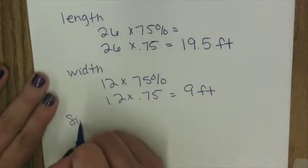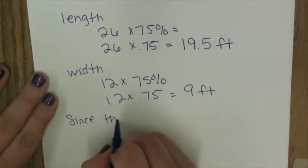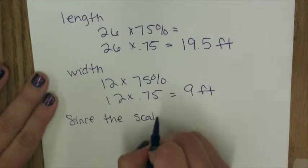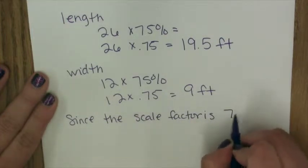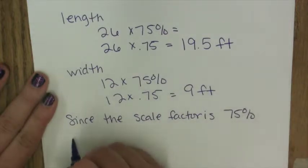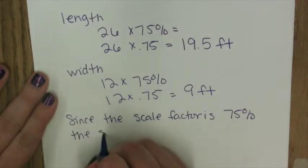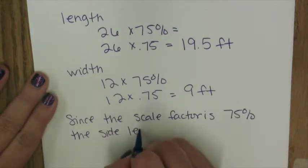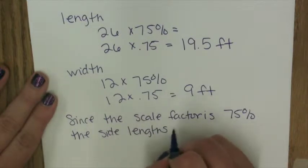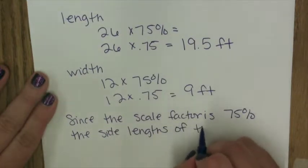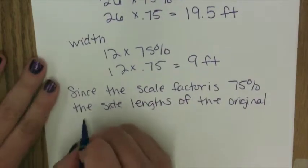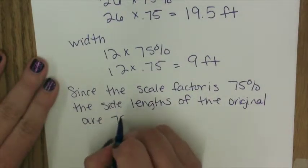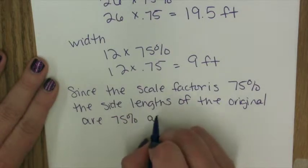Now how does this relate to scale factor? So since the scale factor is 75 percent, that means the side lengths of the actual garden are 75 percent of the original blueprint dimensions as well.